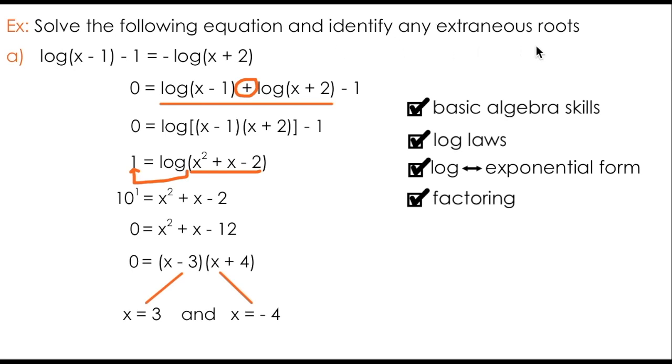Remember an extraneous root is just a perceived solution, or a solution that appears to be a solution, but when substituted back into the original equation, results in a value outside the range of the function. So if I check by subbing x equals 3 into the original equation, you'll see that there are no issues. I end up with the log of 2 minus 1 on the left hand side and negative log of 5 on the right hand side.